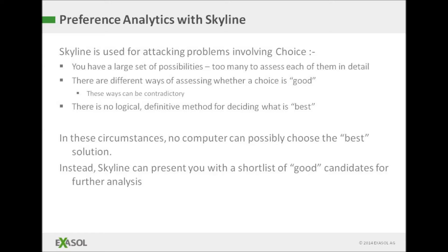Skyline is not intended for the usual kind of BI problem which has only one correct answer and you just need to write some SQL to find it. Skyline helps you in situations where you need to make a choice from a large number of alternatives, all of which have their advantages and disadvantages, and as a result there is no one definitive way of deciding which one of them is best. Skyline doesn't make any final choice for you — it filters the number of choices down to a short list of candidates that are worth investigating further.